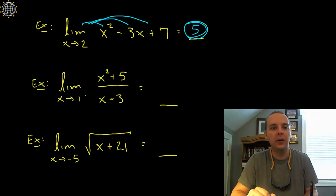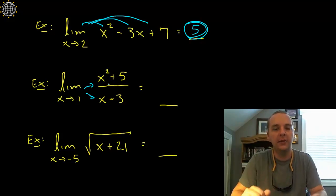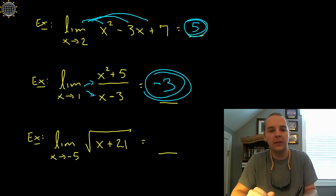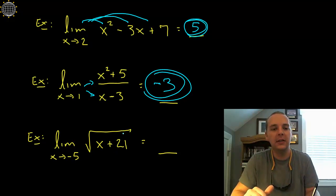Limit as x goes to 1 of x squared plus 5 divided by x minus 3. I'm just going to take the limit of each of these respectively and then divide them. So 1 squared plus 5 is 6, 1 minus 3 is negative 2, so 6 divided by negative 2 is negative 3. And lastly I have one with a radical. This limit can move inside the square root and so we'd have negative 5 plus 21 is 16 and the square root of 16 is 4.